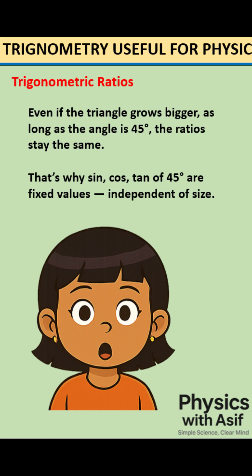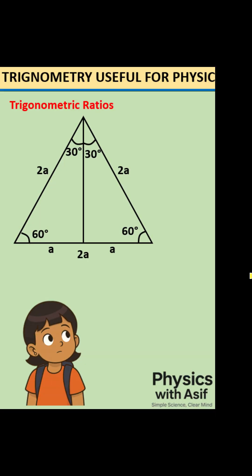Now let's see 60 degrees and 30 degrees. Start with an equilateral triangle of side A. Drop a height, we get a right triangle.